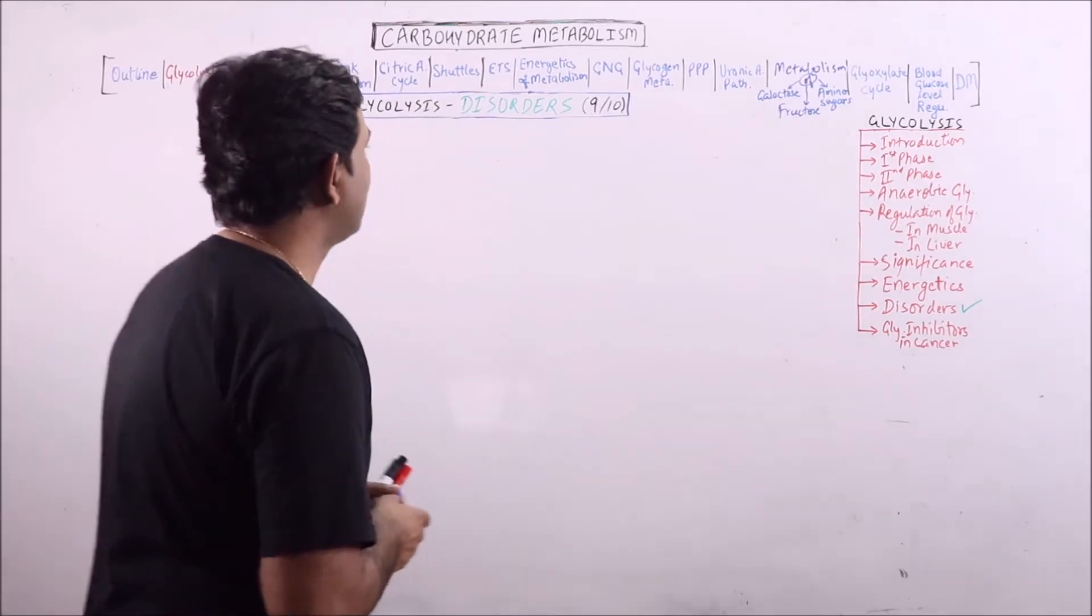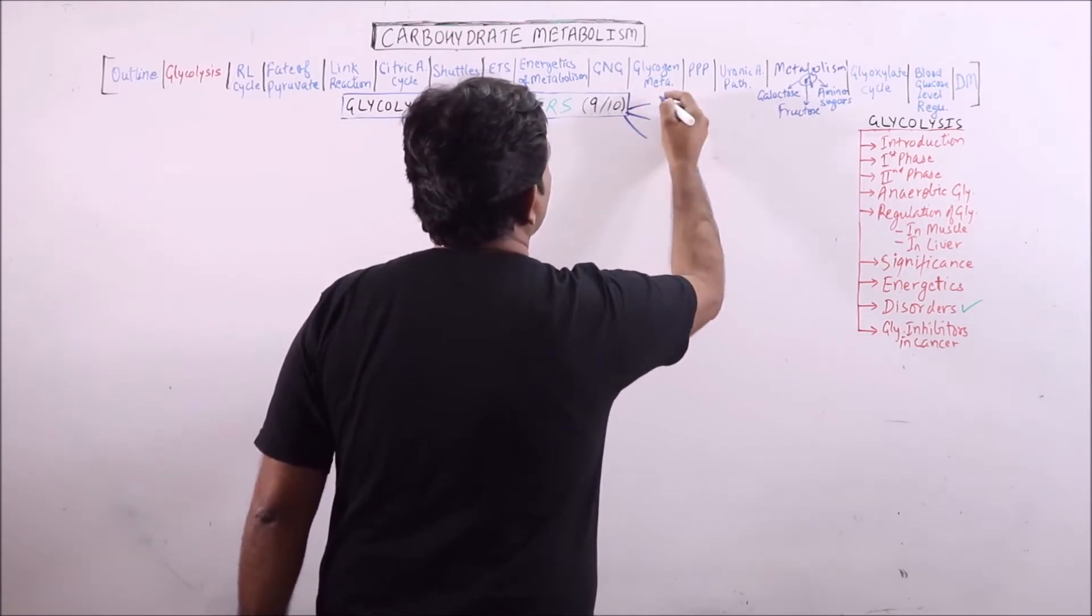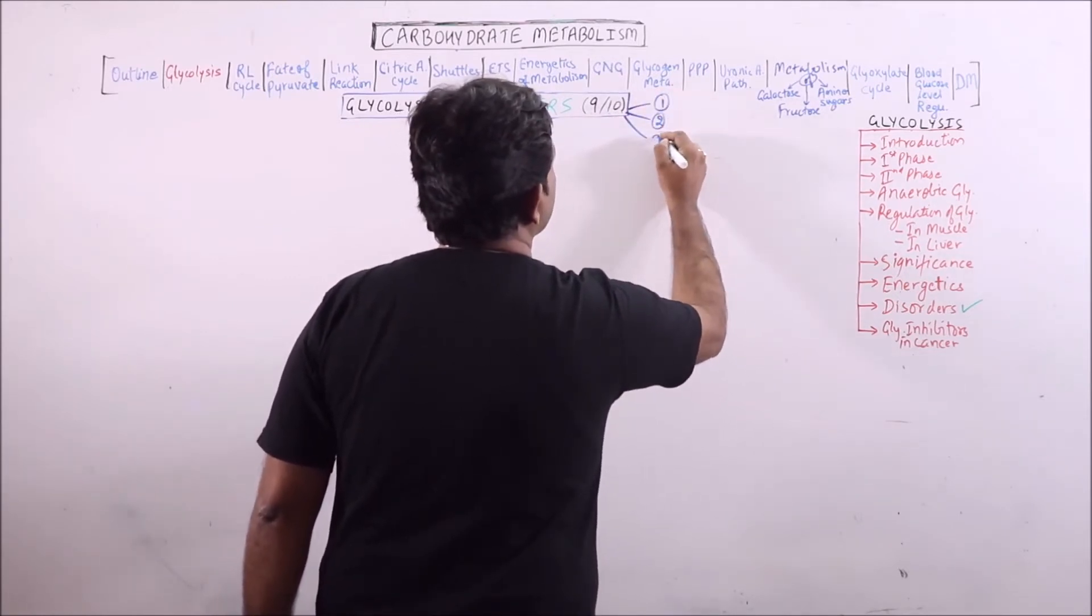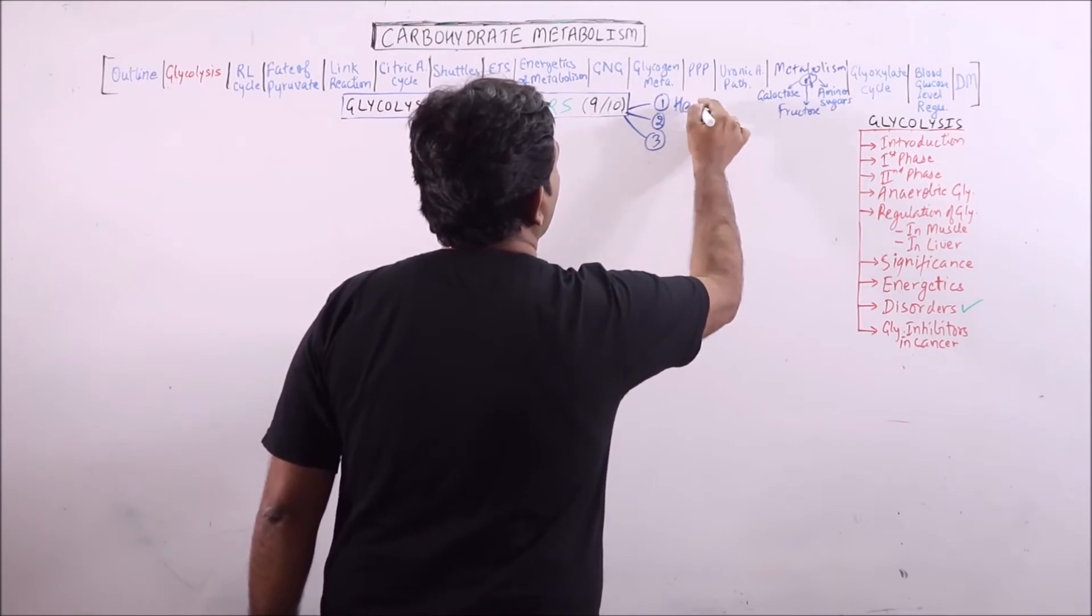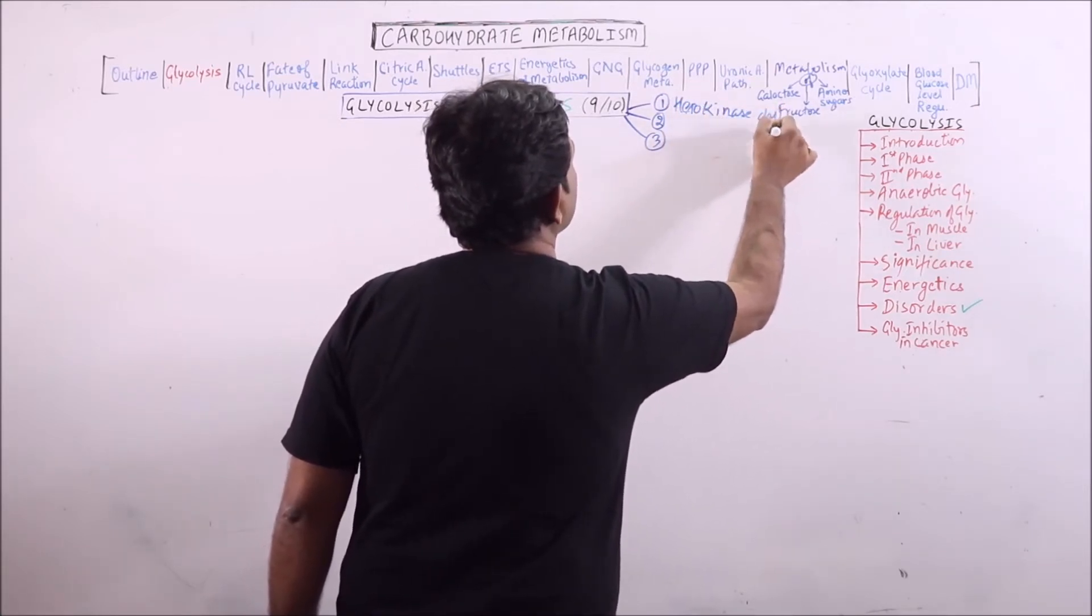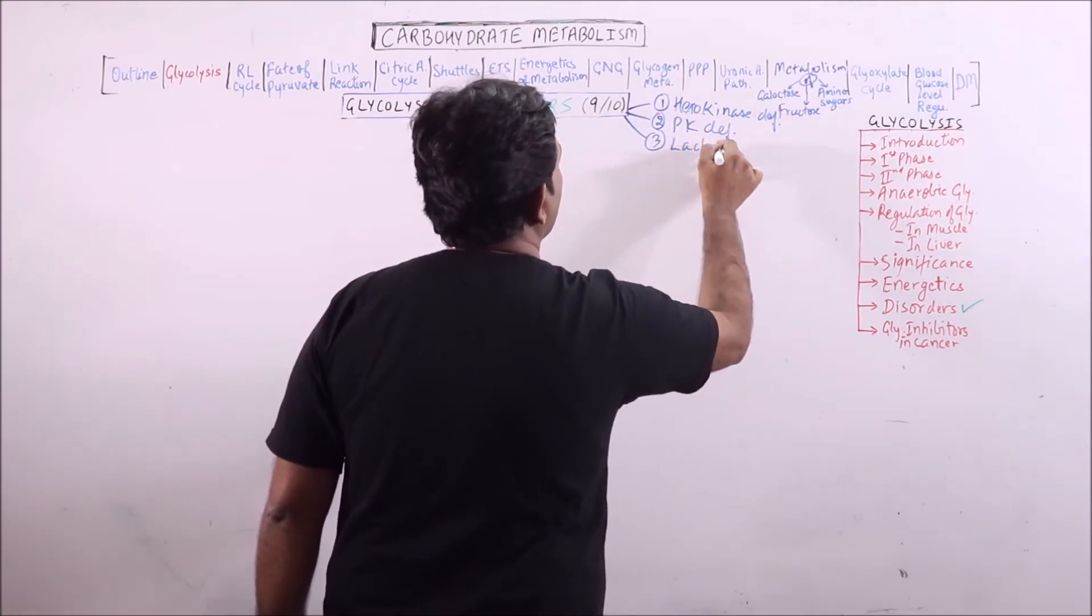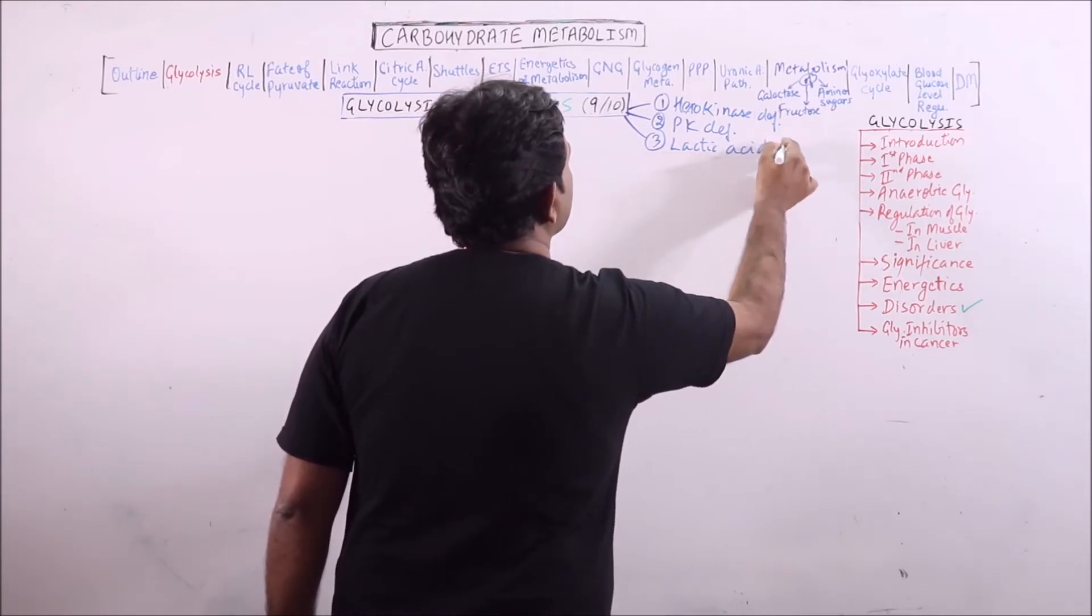The disorders of glycolysis include mainly three conditions: hexokinase deficiency, pyruvate kinase deficiency, and lactic acidosis.